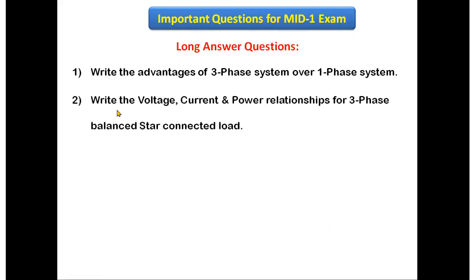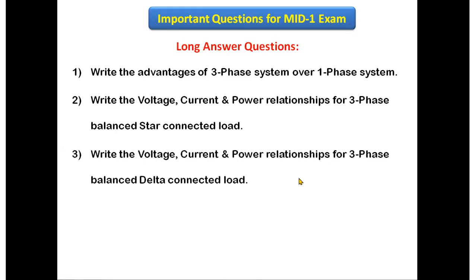The next question is: write the voltage, current, and power relationships for a three-phase balanced star connected load. You have to draw the star connected load diagram, then the phasor diagram, and from that derive the relationship between line voltage and phase voltage, line current and phase current, and the power equations in terms of phase voltage, phase currents, line voltage, and line currents.